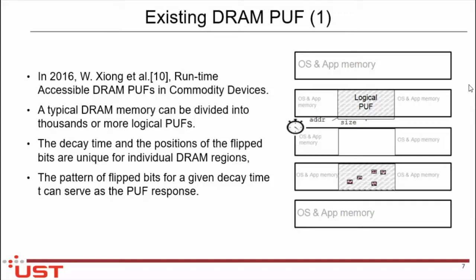The existing work is that in 2016, WZ YONG and her team proposed a runtime accessible DRAM PUF in commodity devices. Their team took a memory region and fixed it as a logical PUF. After that, they turned the refresh functionality off. In WZ YONG's case, the refresh-off duration was 2 seconds. After the 2 seconds, she reads the data, and this data behaves as the PUF extraction method. After PUF extraction, the memory is returned to normal use.